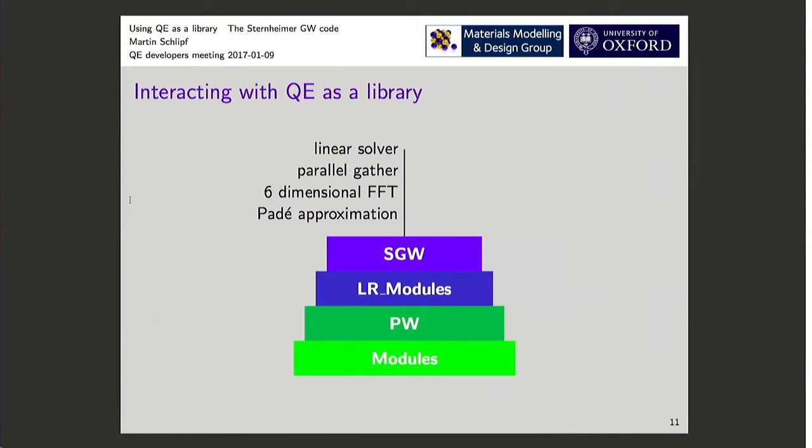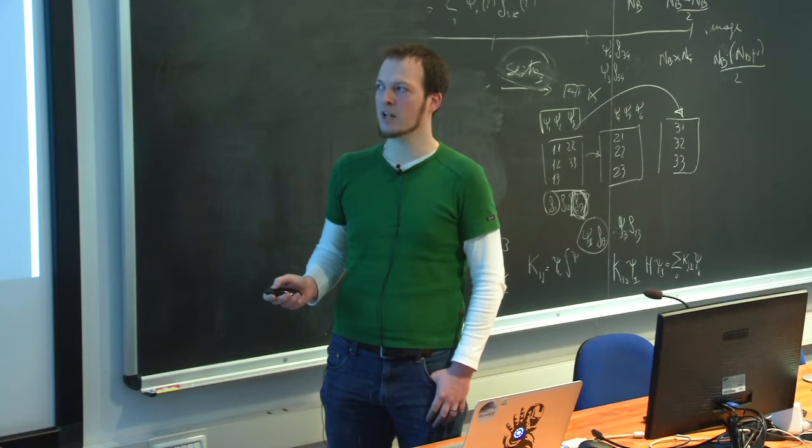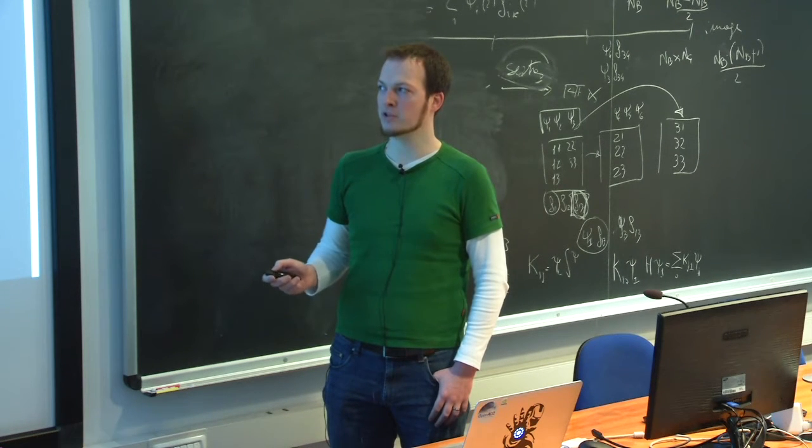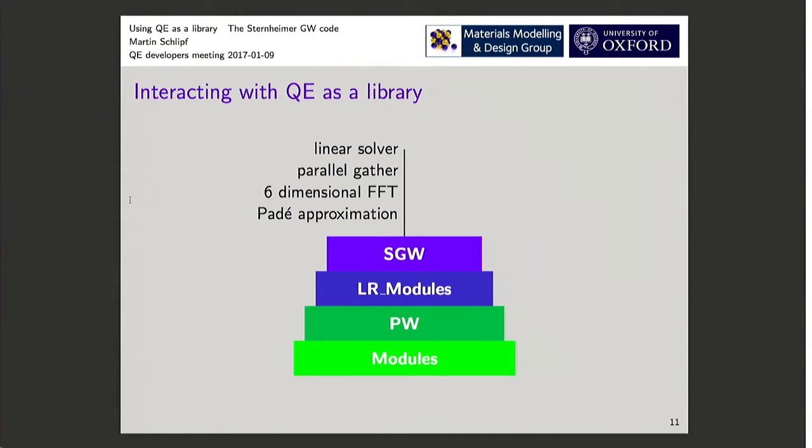This also provides some routines that are more general than just SGW. So the linear solver I talked about could in principle be merged back into LR modules. And there are some other routines like a parallel MPI gather, a wrapper on the MPI all-gather or MPI gather. If there's some interest, these could propagate back to lower levels so that other people in the community can use it.